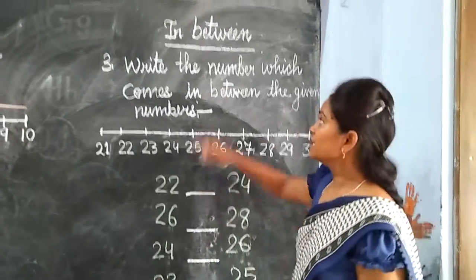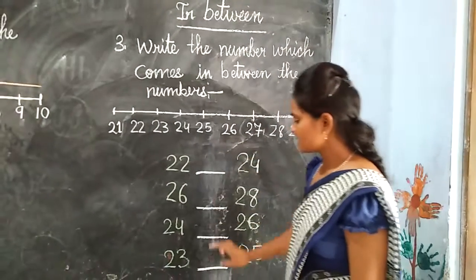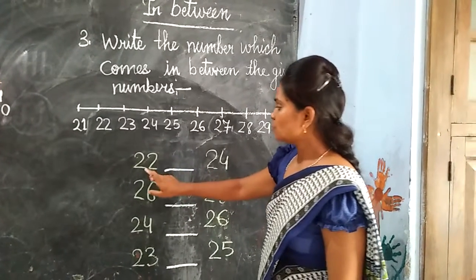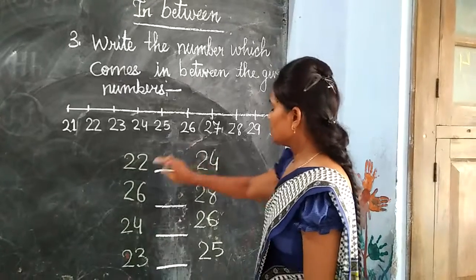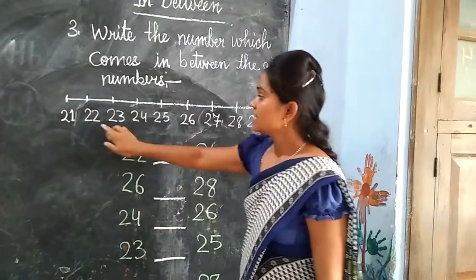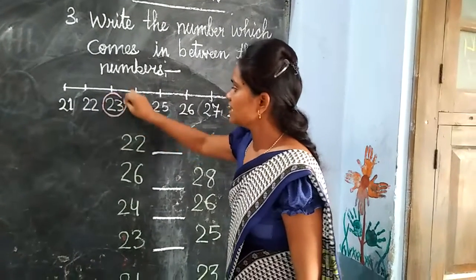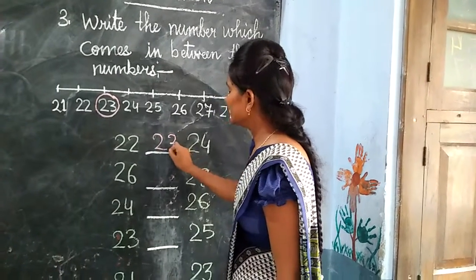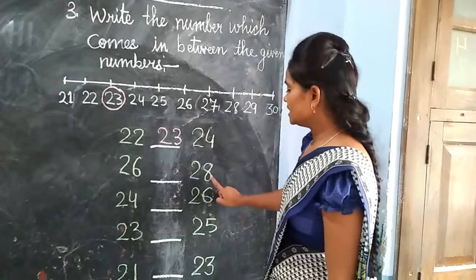Now we will learn about in between. In between means the middle. I have written some numbers and we will find out what comes in the middle. 22 dash 24 — what comes in between 22 and 24? Yes — it comes 23. We will write here: 23.